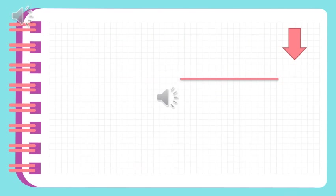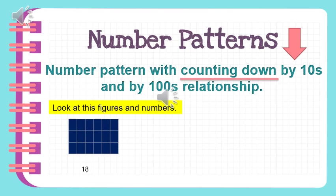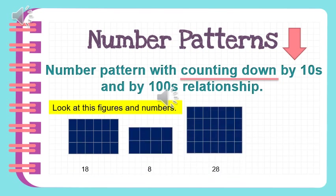Let's move on to number patterns with counting down by tens and by hundreds relationship. When you say counting down, it means decreasing or descending order from biggest to smallest number. We have here eighteen boxes, eight boxes, and twenty-eight boxes. When you arrange this in descending order or counting down, we start from the biggest, which is twenty-eight, next is eighteen, and last is eight. We counted it down using a tens pattern.